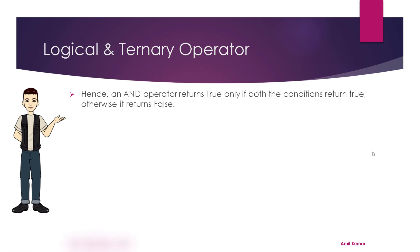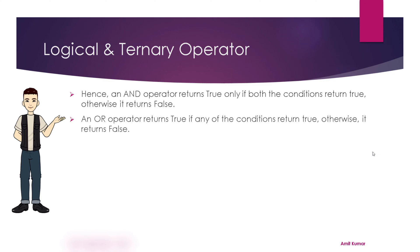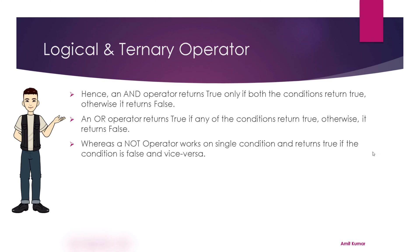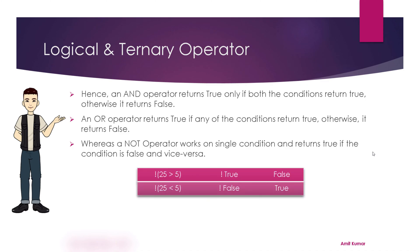An AND operator returns true only if both conditions return true, otherwise it returns false. An OR operator returns true if any of the conditions return true, otherwise it returns false. A NOT operator works on a single condition — that's why it is known as a unary operator — and it returns true if the condition is false and vice versa. So if the given condition is true and we are using NOT operator, the final result will be false, and if the given condition is false, the final result will be true.